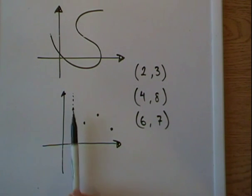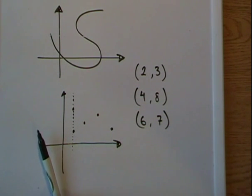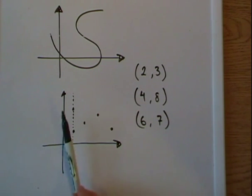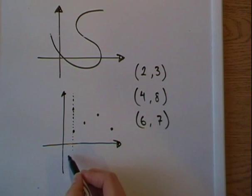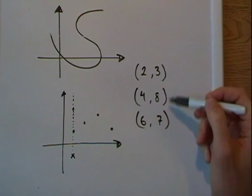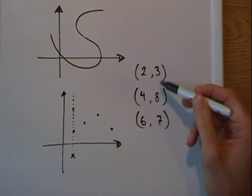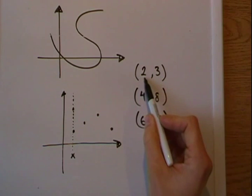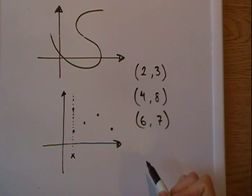So what to remember is, if you look at these points that I just randomly scattered here throughout the graph, if it's a function, it cannot have two points on the same vertical line. The same vertical line means the same x value. So these points cannot have the same x value, any of them, which they don't have. This one has 2, this one has 4, and this one has 6.